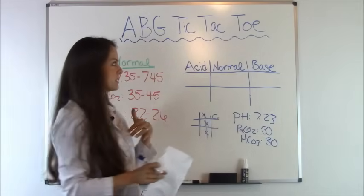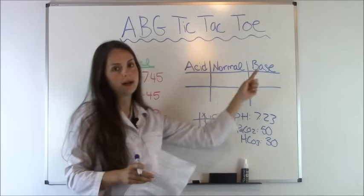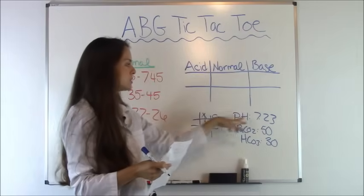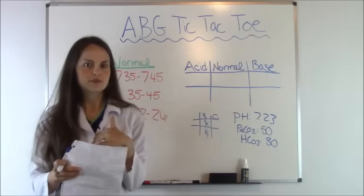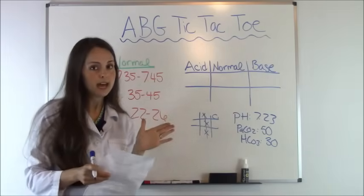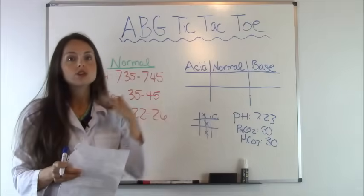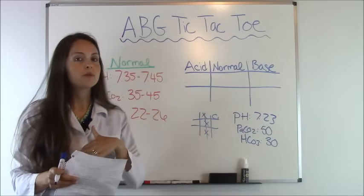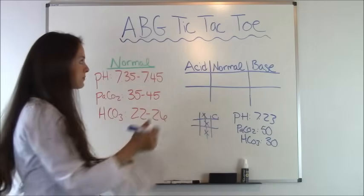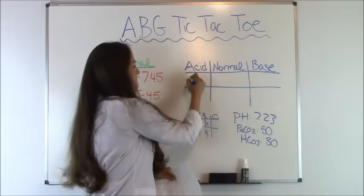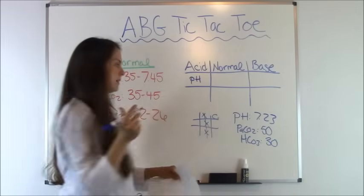After you've set up your tic-tac-toe, you wrote acid, normal, and base up at the top, you're going to look at your pH. It's 7.23. So remember, normal pH is 7.35 to 7.45, so 7.23 would make it an acid. So under acid, we're going to write pH.